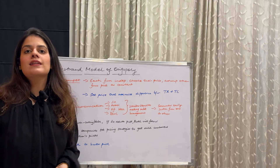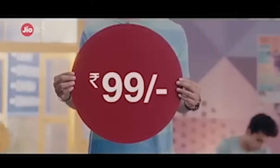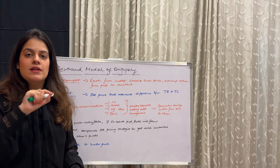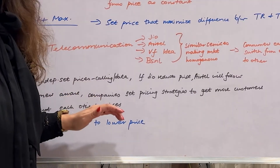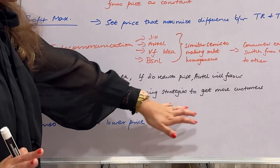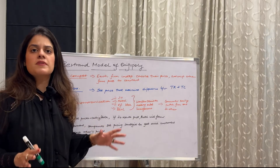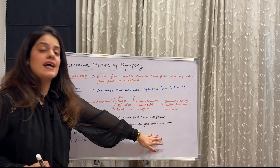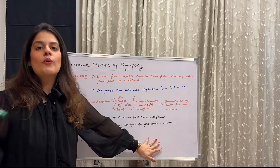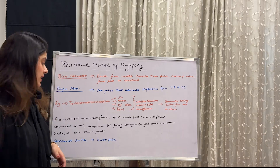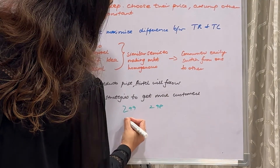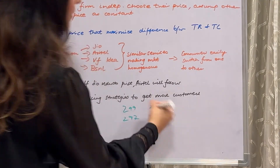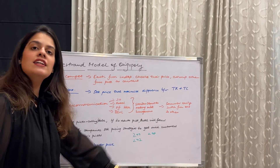Firms kept undercutting each other's prices because everyone would go to the cheapest option. Consumers are not stupid — they go to the company offering the lowest cost. So if Jio is at ₹299, Airtel drops to ₹298, then ₹297, and so on. They all keep competing by continuously undercutting each other's price.